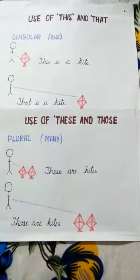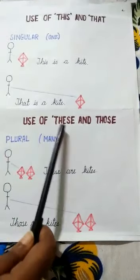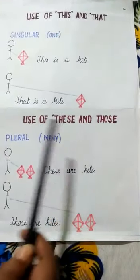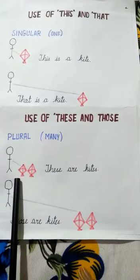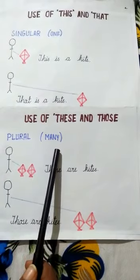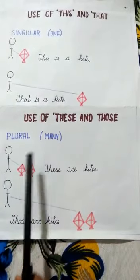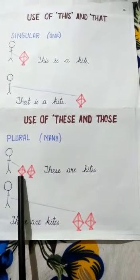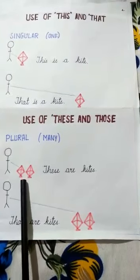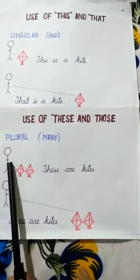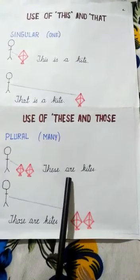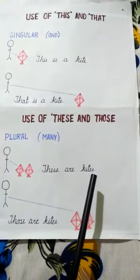Now, the use of these and those. These — we use these to talk about more than one person, places, animals or things that are near to us. For example, these are kites.